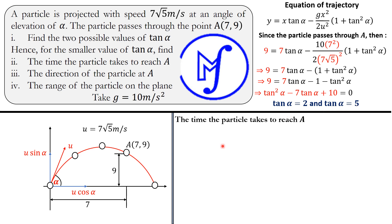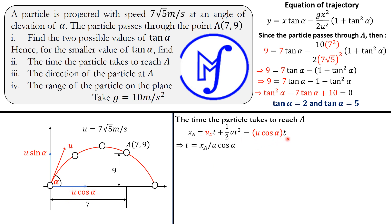The next part asks us to use the smaller value of tan alpha and find the time for the particle to reach point A. To find the time, we consider the horizontal distance traveled, which is 7 units. Generally, the horizontal distance is x_A = u_x · t, since there is no acceleration in the horizontal direction. Here u_x = u·cos α, so t = x_A / (u·cos α) = 7 / (u·cos α).